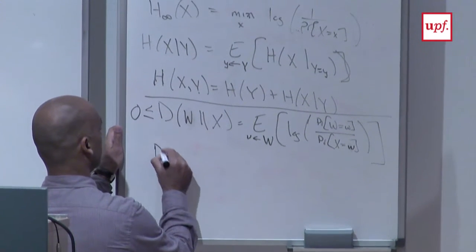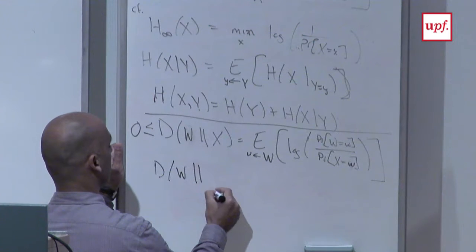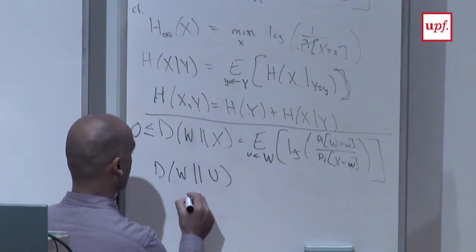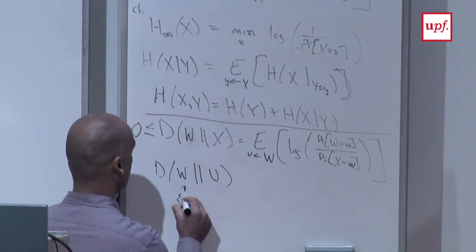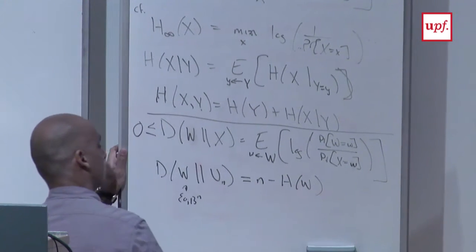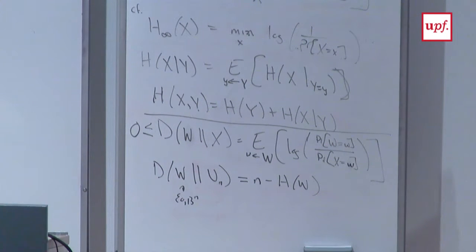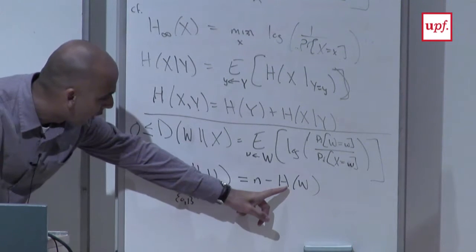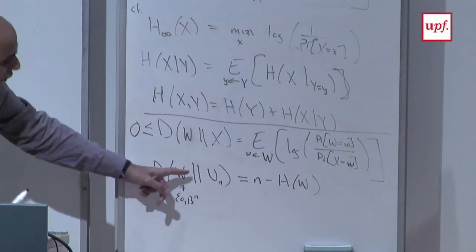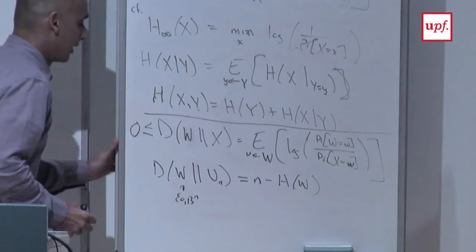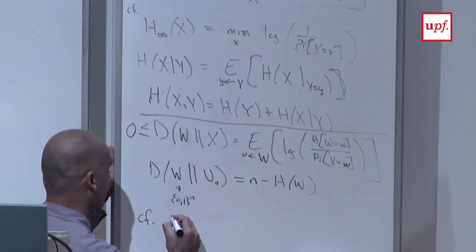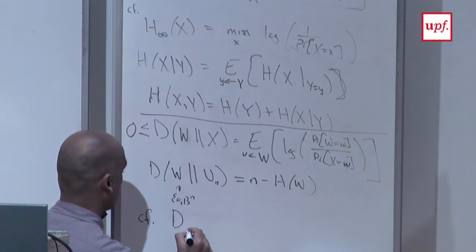Divergence is not symmetric and doesn't satisfy the triangle inequality — it's not a metric. But it's a measure of similarity of distributions that plays very nicely with Shannon entropy. For example, the divergence between a random variable W taking values in {0,1}^n and the uniform distribution on n bits is exactly n minus the entropy of W.